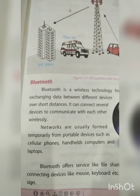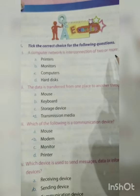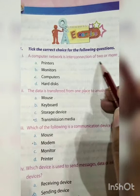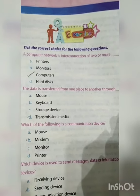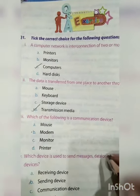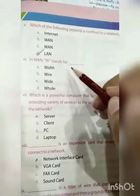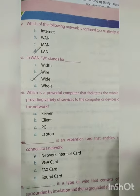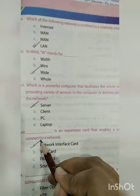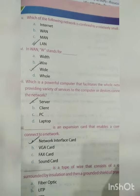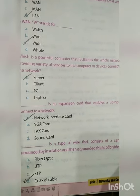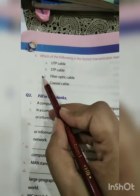Open your exercise. Question 1: Take the correct choice. A computer network is interconnection of two or more computers. Data is transferred through transmission media. Communication device: modem. Sending messages device: sending device. Network confined to small area: LAN. Powerful computer facilitating the whole network: server. Expansion card connecting computer to network: network interface card (NIC). Type of wire: coaxial cable. Fastest transmission media: fiber optic cable.